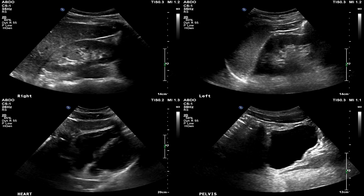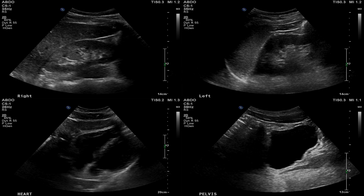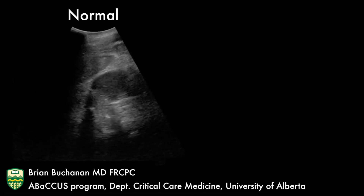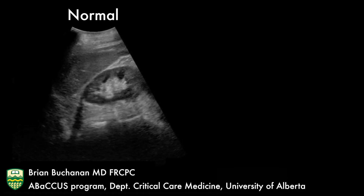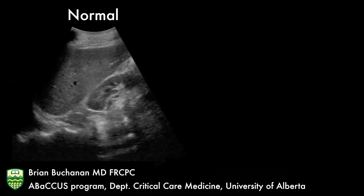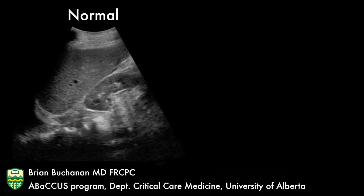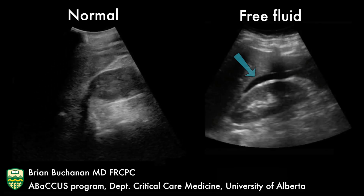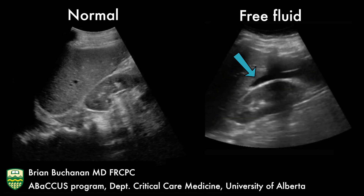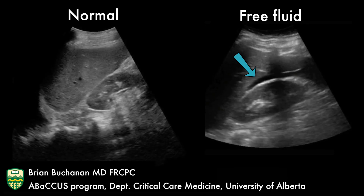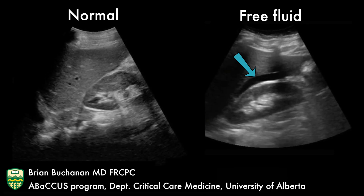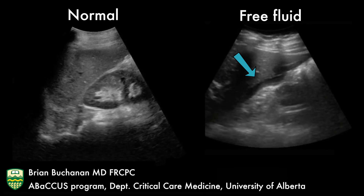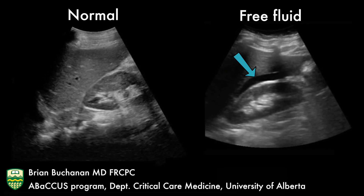Let's now look at some examples of pathology. Here we see footage from a normal right upper quadrant ultrasound, and we can contrast that with an ultrasound that shows a thin rim of free fluid collecting within the hepatorenal space.